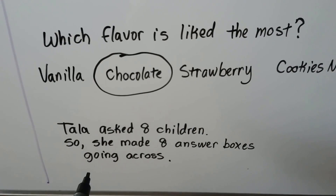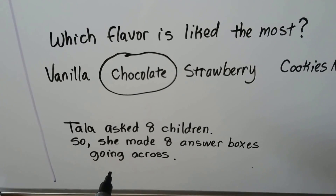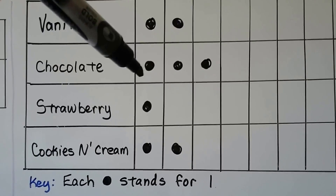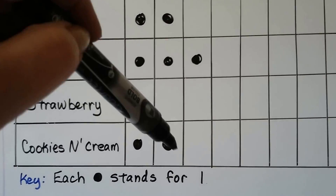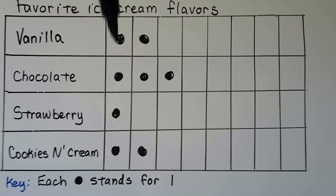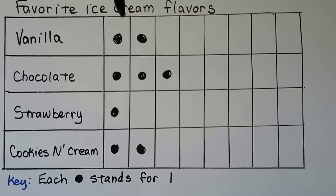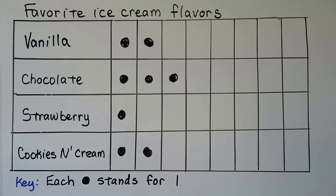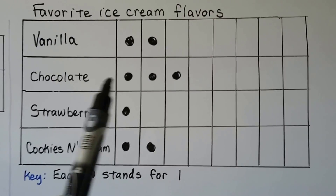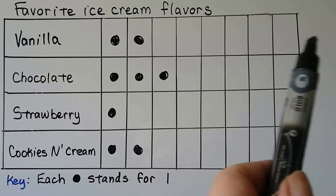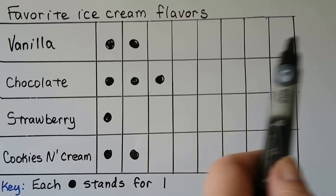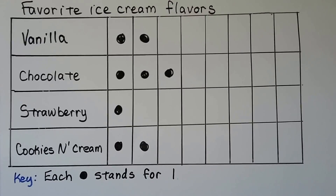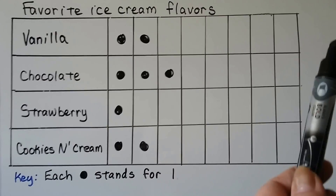Tala asked eight children, so she made eight answer boxes going across. We can tell by the dots — one, two, three, four, five, six, seven, eight. She has eight columns of answer boxes going across, just in case they all said they like chocolate or they all said they like vanilla — so there would be room for all eight children to like the same one. However many people you ask, that's how many answer boxes going across that you need.